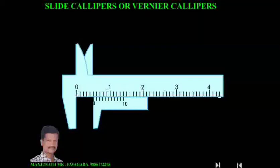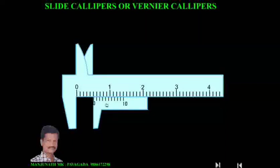Here, this is the main scale and this is the vernier scale. The main scale is attached to this jaw. This is the lower jaw and this is the upper jaw. The vernier scale is attached to the lower jaw, and this is also the upper jaw. So this is the vernier scale.